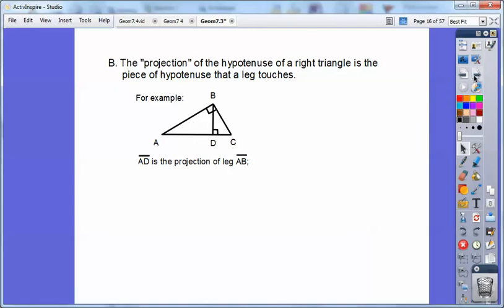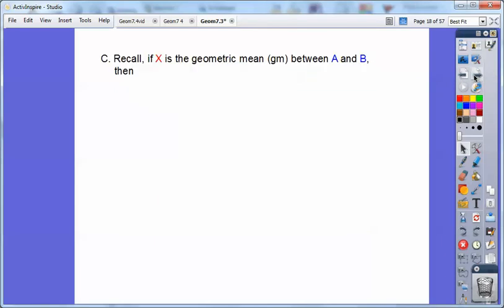And then DC, this little piece, is the piece of the hypotenuse that's touching this leg of the right triangle. So it's the projection to leg BC. Okay, you need to know those to know about geometric means that's coming up.